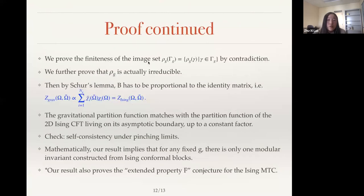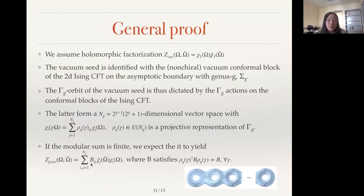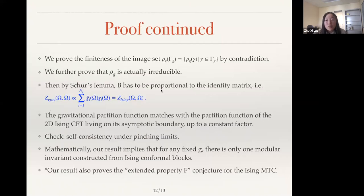So with this, and this need to be proved, we need to prove by contradiction and furthermore, we can prove that this rho g, the previously mentioned projective representation is actually irreducible. These two parts are very interesting, but long and technical. So I'm not going to go through them for today's talk. So after proving these, so since this rho g is irreducible, we can use Schur's lemma and show that the matrix B appearing here should be proportional just to the identity matrix. So z gravity is just proportional to chi i bar times chi i. And this is the Ising partition function for arbitrary genus. At this point, we have shown that the gravitational partition function matches with the partition function of the Ising CFT, living on its asymptotic boundary of genus G, up to a constant prefactor.